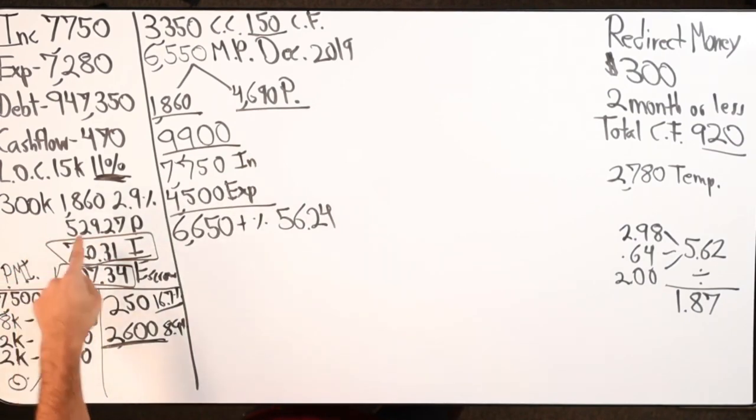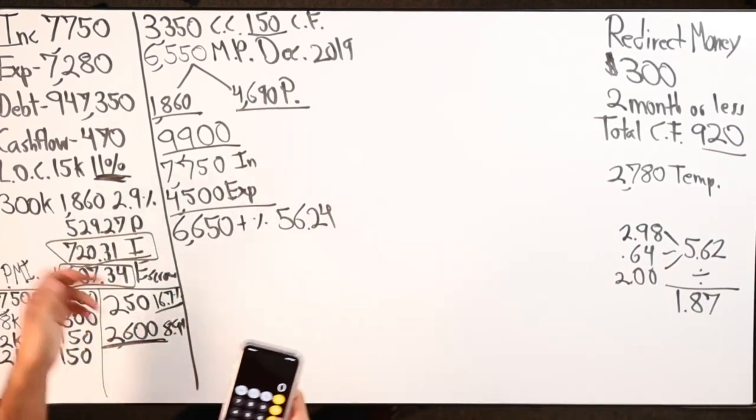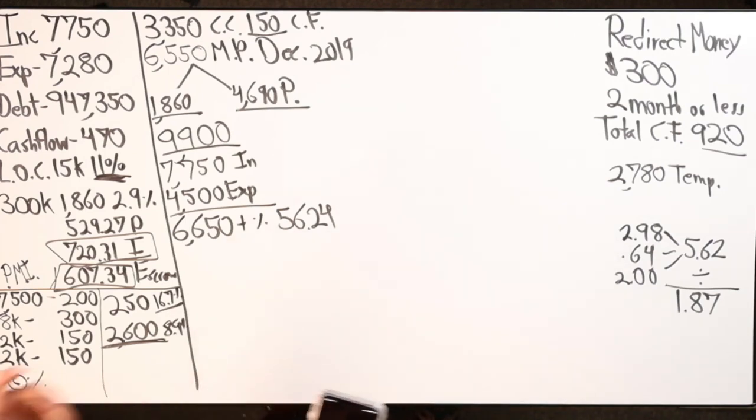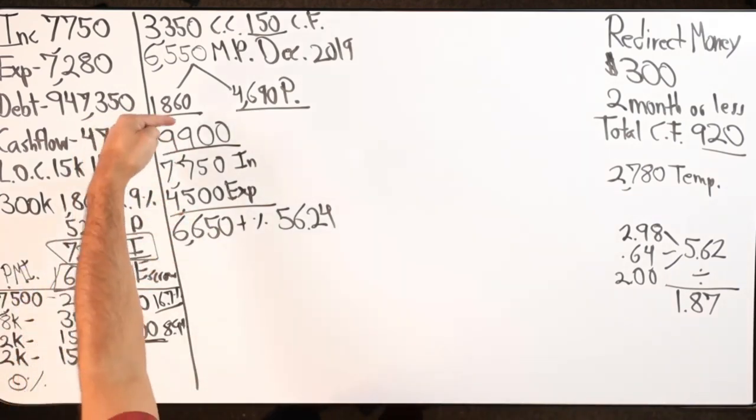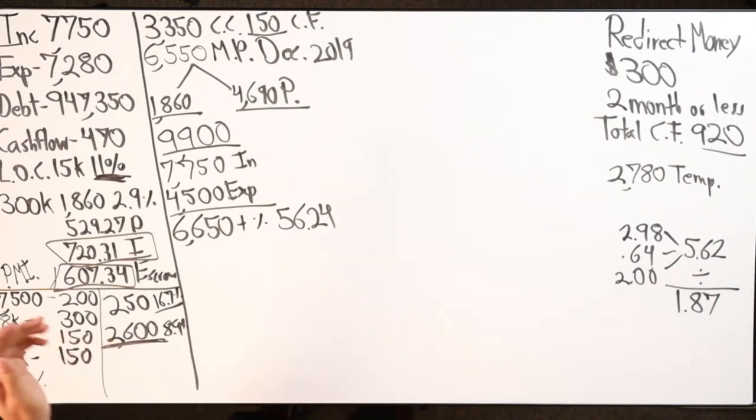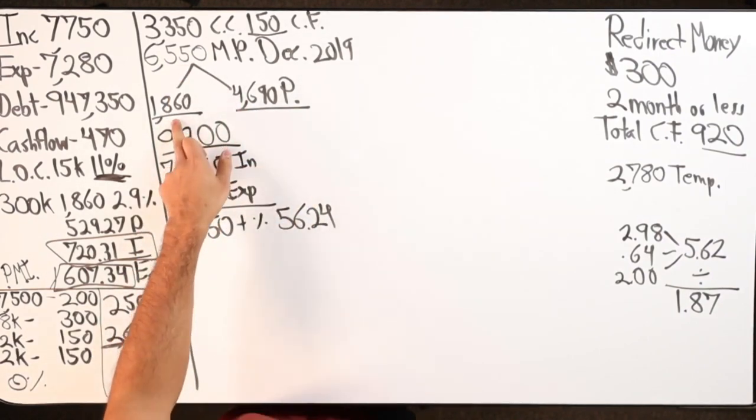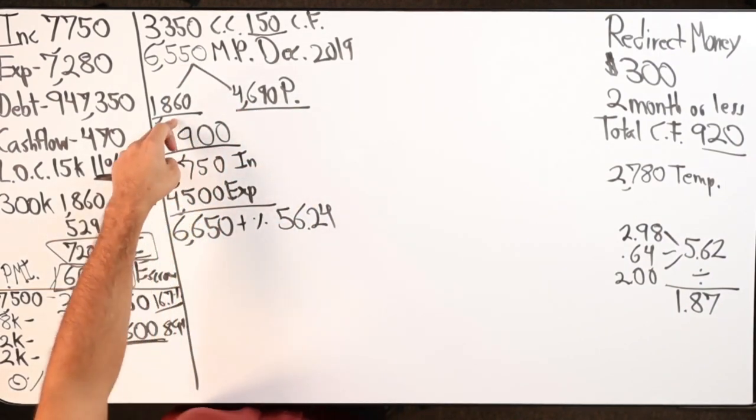And then what I did over here, that $4,690 on principal only, $529.27. So you could say I made $4,690 divided by $529.27, that's 8.86 mortgage payments if I was to just continue to do the $1,860 spread it out. So I could possibly remove about 8 to 10 months off the mortgage just by shifting $4,690 and then satisfying the mortgage payment for that month itself.